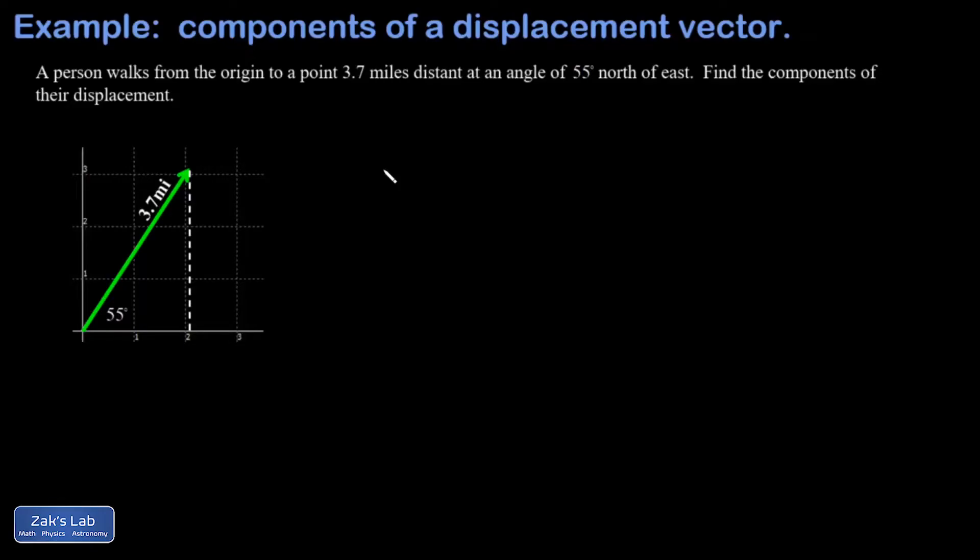In this video, we're breaking a displacement vector into its components. We're given a vector of 3.7 miles at an angle of 55 degrees north of east. I want to find the components, meaning the eastward and northward pieces that add to give the original polar vector.